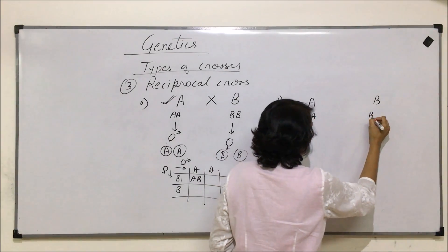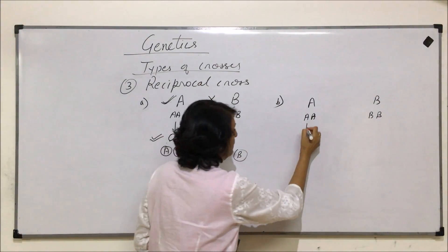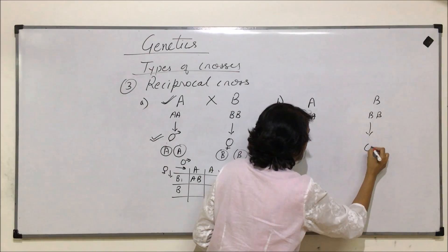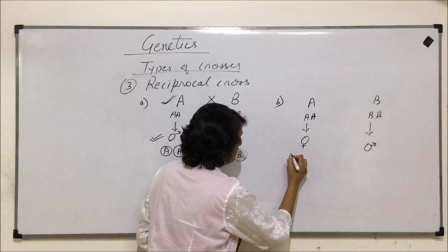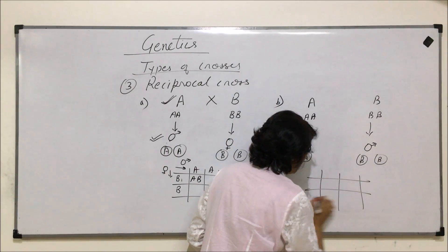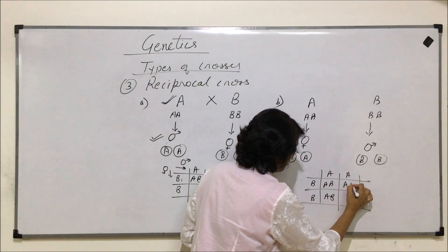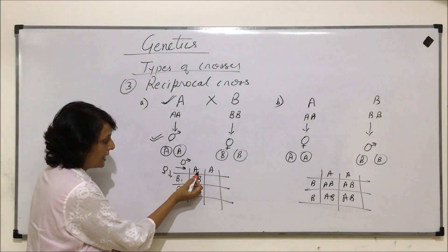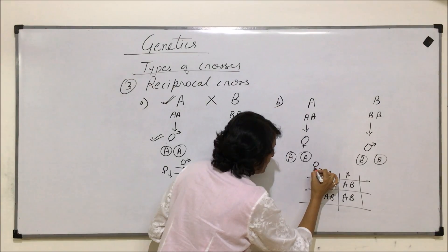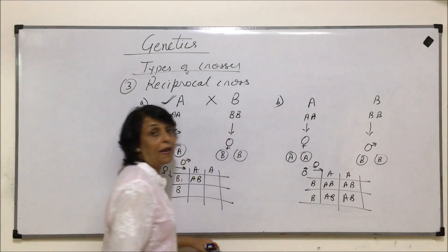In the reciprocal cross, the male gamete will be taken from B. Everything else remains the same — genotype is still AA and BB. The only difference is: in the first cross we took the male gamete from A, and here we take the female gamete from A; in the first case we took the female gamete from B, and here we take the male gamete from B. The gametes and the Punnett square genotype of the offspring remain the same — AB — but the difference is that A was the male gamete in the first cross and the female gamete in the reciprocal cross.